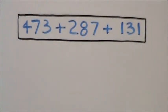In this video, we're going to be talking about a shortcut way of performing three-digit by three-digit addition without using regrouping. Our problem is 473 plus 287 plus 131.